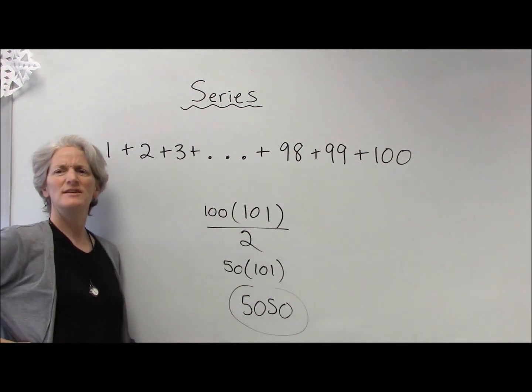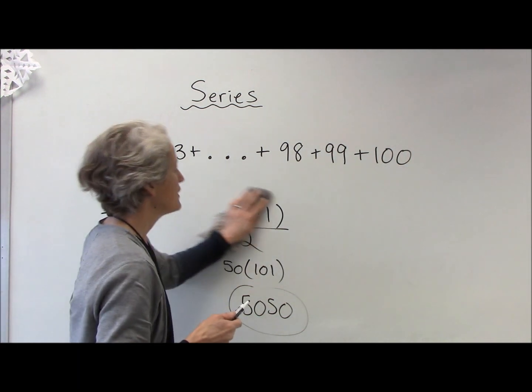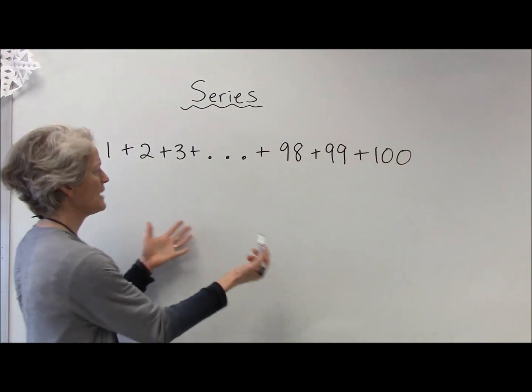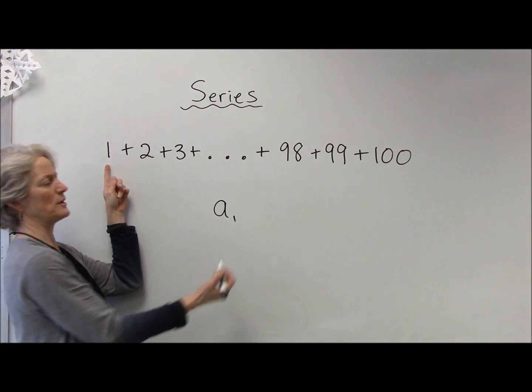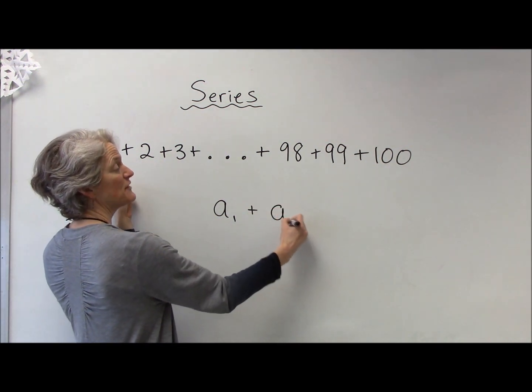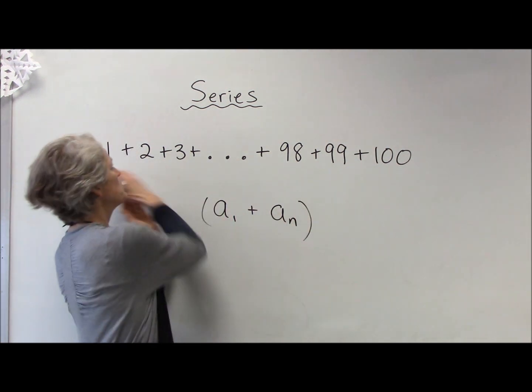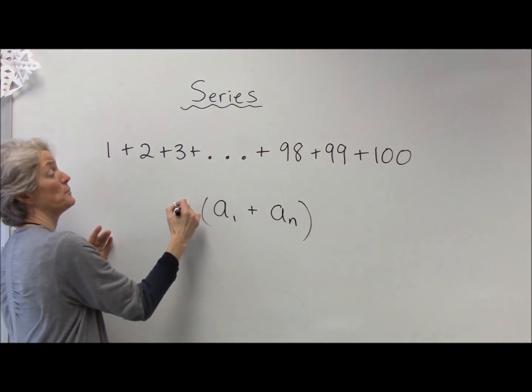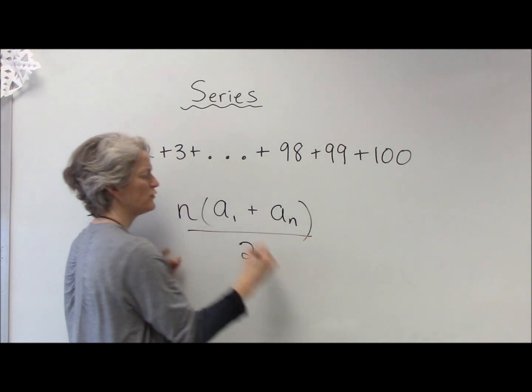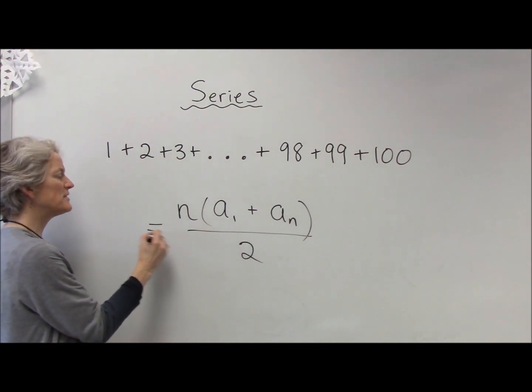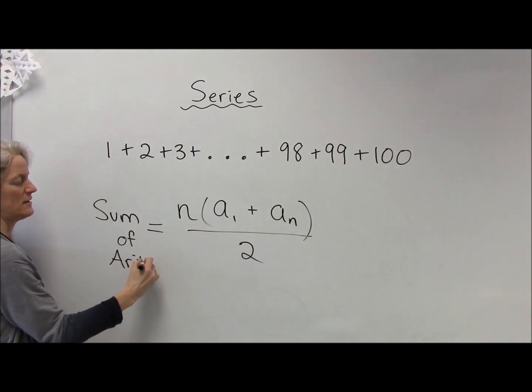Now, what type of a series is this? Arithmetic or geometric? That's arithmetic. So here we go. Basically what Gauss did is he took the first term, we can call that a₁, he added it to the last term, which we'll call aₙ, he multiplied it by the number of terms, which would just be n, and then he divided it by two. This will give me the sum of any arithmetic series.